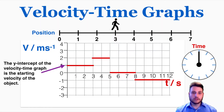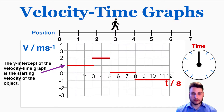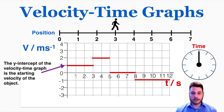Something you may have noticed is that the y-intercept of the velocity-time graph is the starting velocity of the object. They started with a velocity of 1 meter per second at time equals 0, so that's what the y-intercept of a velocity-time graph tells you.